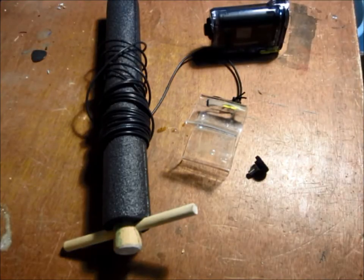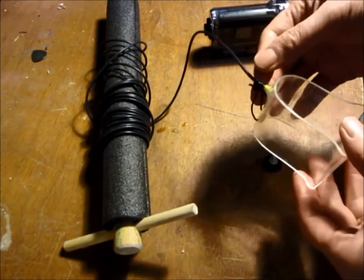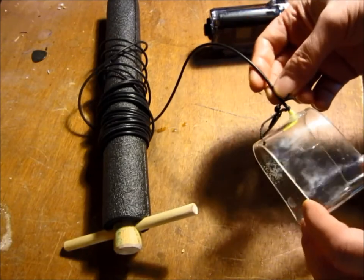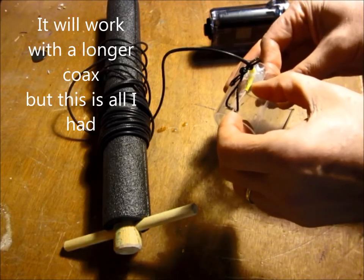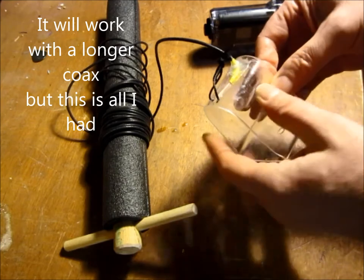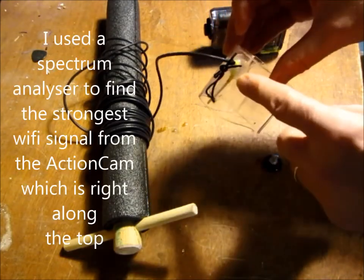So the Wi-Fi obviously doesn't work underwater. What I have here is about 15 feet of RG174 coax. I stripped this, just under 30mm, put some heat shrink on it to seal it.